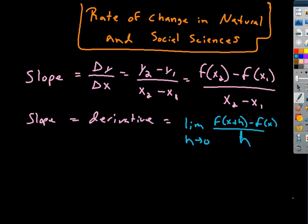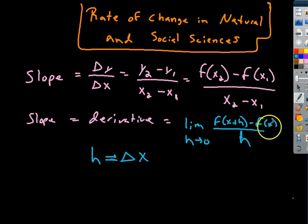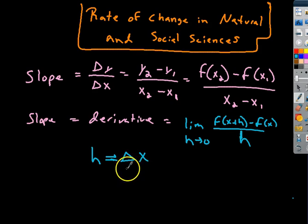Somewhere in the reading you might have noticed that h was a substitution for change in x. So h was basically a substitution for Δx — that triangle means 'change in.' This is still change in y; this is x sub 1 and x sub 2. So when we said h approaches 0, we were really considering when the change of x approaches 0.